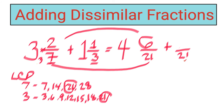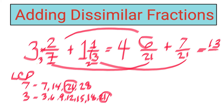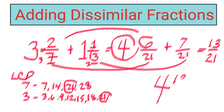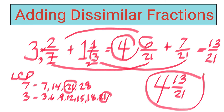Now add the numerators: six plus seven gives thirteen. Copy the denominator, which is twenty-one. But take note, you have the whole number four, so the answer is four and thirteen over twenty-one. The proper fraction thirteen over twenty-one is already in its simplest form. Checking with the calculator confirms the answer is four and thirteen over twenty-one.